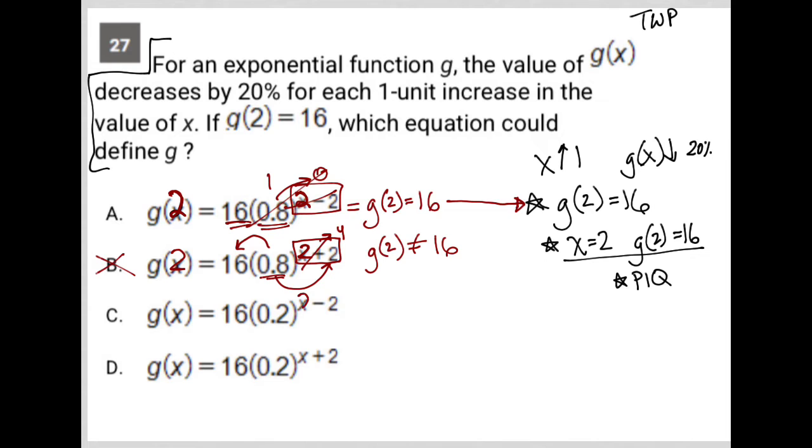Choice C, I put a 2 here and here. 2 minus 2 is 0. 0.2 to the zero power is 1. 16 times 1 is 16. So here we go. Another case where g(2) equals 16.